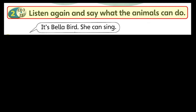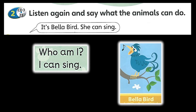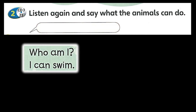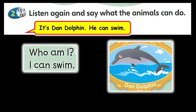2. Listen again and say what the animals can do. Who am I? I can sing. It's Bella Bird. She can sing. Who am I? I can swim. It's Dan Dauphin. He can swim.